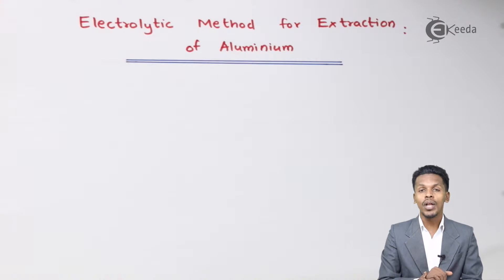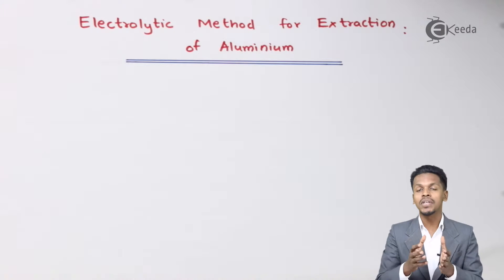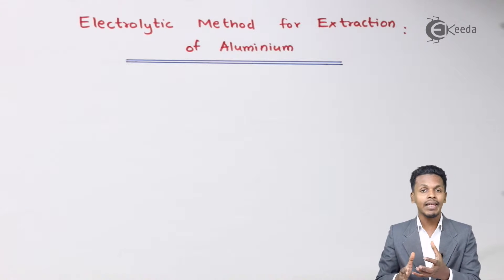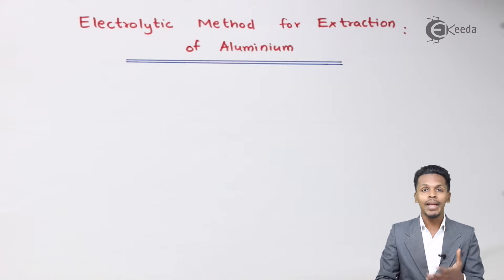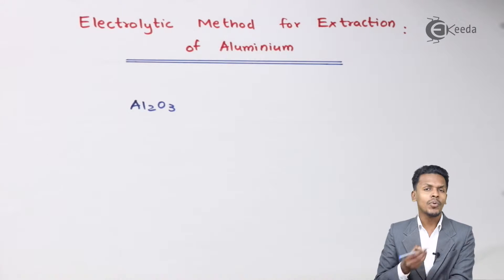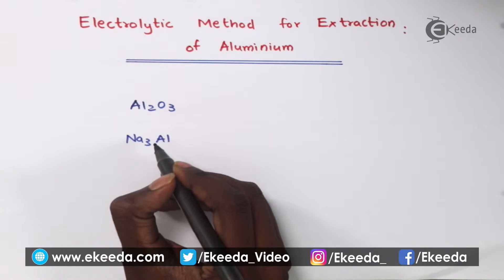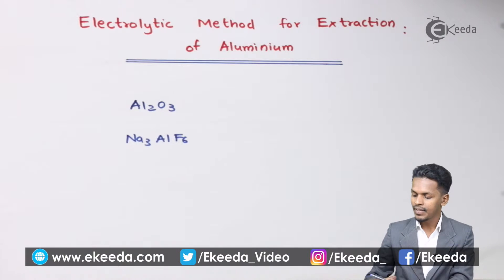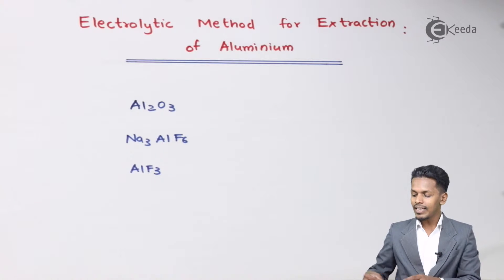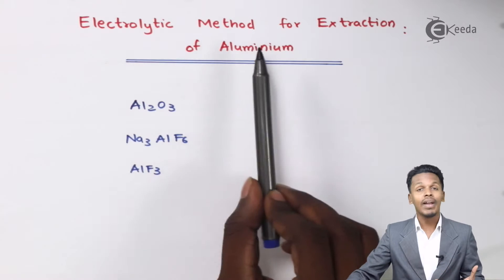In this topic we are going to talk about the electrolytic method for the extraction of aluminum. For that we need a particular container that should consist of an anode and cathode along with an electrolyte. Aluminum can be obtained from alumina, that is Al2O3. It can also be obtained from cryolite, that is Na3AlF6, along with AlF3. These are the ores from which we can extract aluminum by electrolytic method.